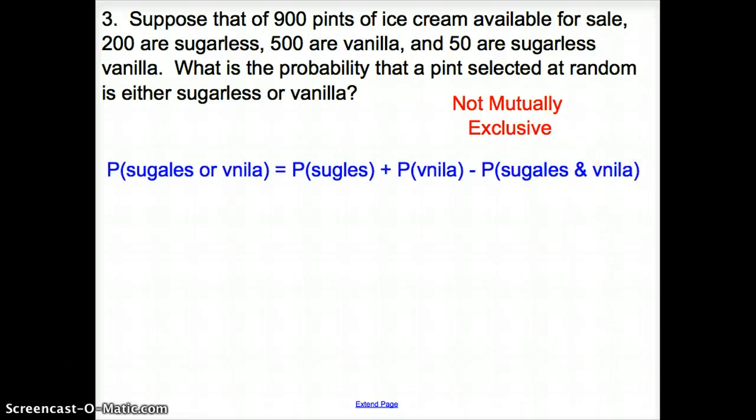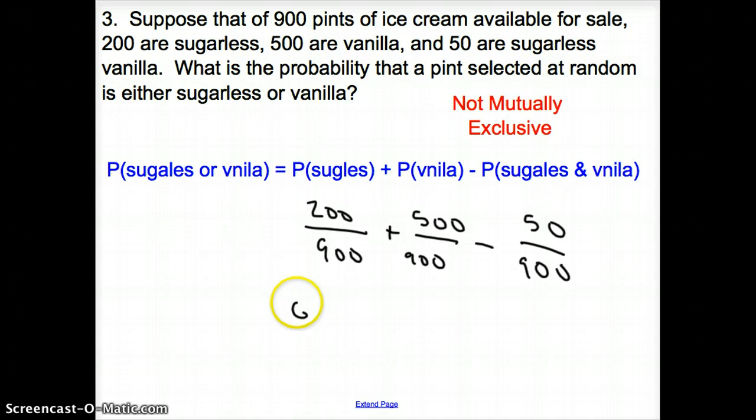So now we have to figure out the probability of sugarless, probability of vanilla, and what we counted twice. So how many are sugarless? We have 200 that are sugarless over our total over 900. What is the probability of being vanilla? We have 500 over 900. Now we have to subtract out everything we counted twice. Well, we have 50. So it's 50 over 900 to get us a grand total of 650 over 900. So it simplifies to 13 eighteenths.